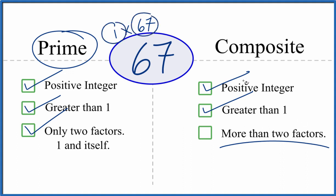We said there are only two factors. So 67 is not a composite number. It's a prime number.